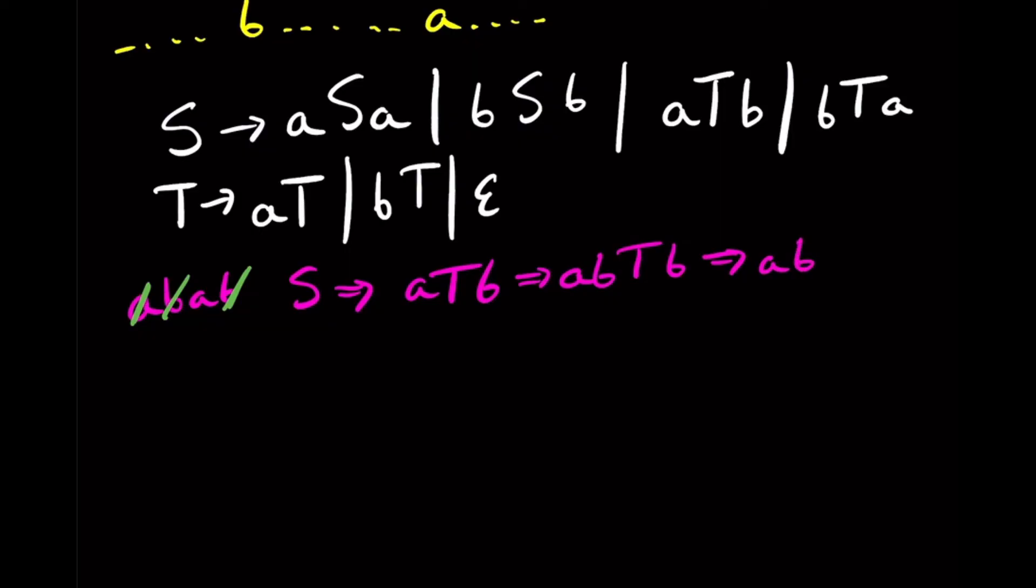So we'll have A B A T B, because we applied T goes to A T. And that will kill off that A there. And then finally, we apply the final rule, which is setting T to empty. That B was not good. Let's do that again. All right.